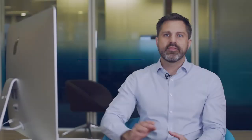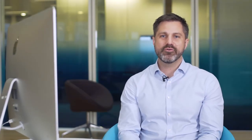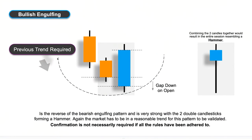The next pattern is the bullish engulfing pattern, which is the opposite of the bearish one. The market gaps lower the next day with the trend down, so initially there seems to be downward momentum and a potential sell trade. But by the end of the day the buyers have come back into the market and the price finishes above the previous close, making it a potential opportunity to place a buy trade.